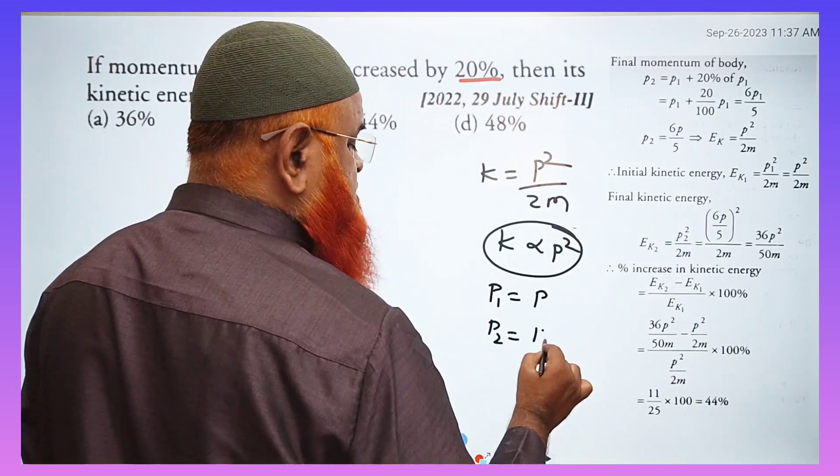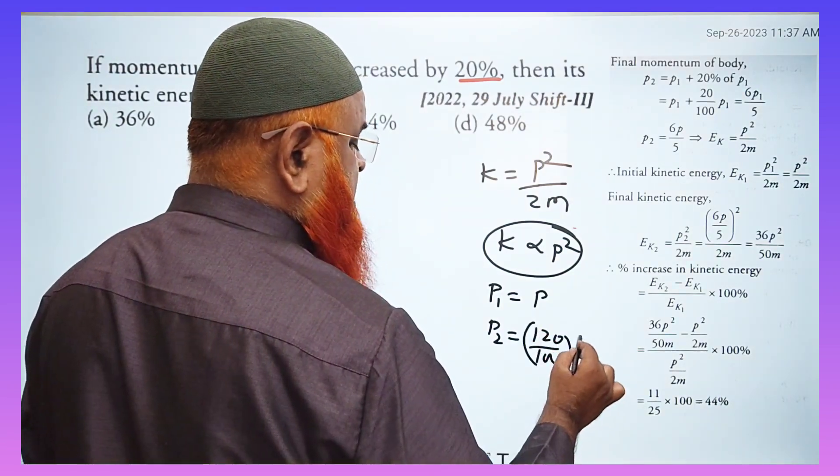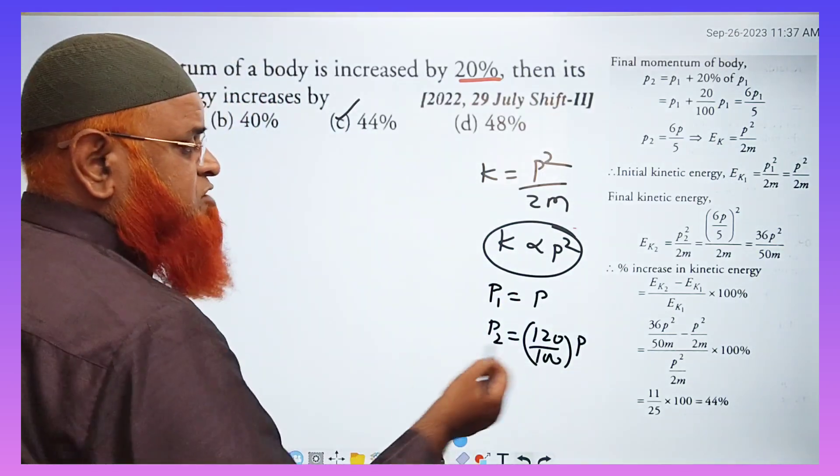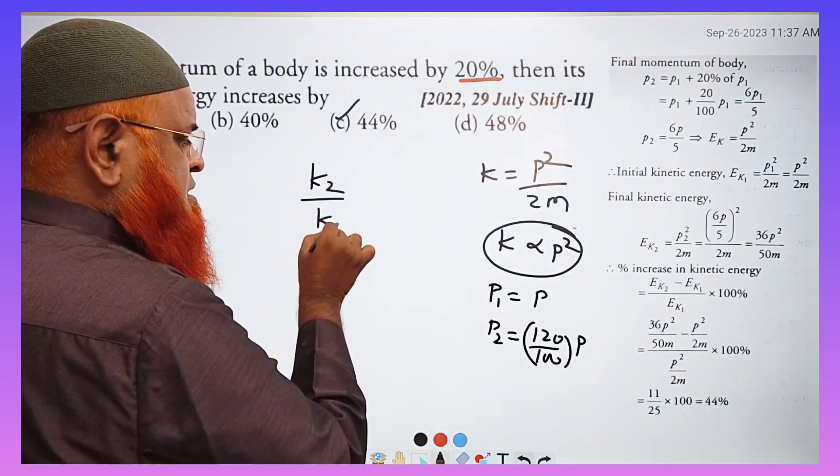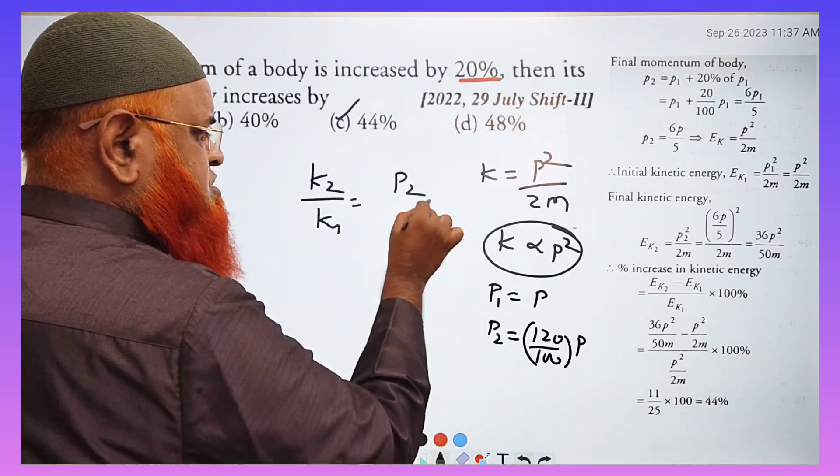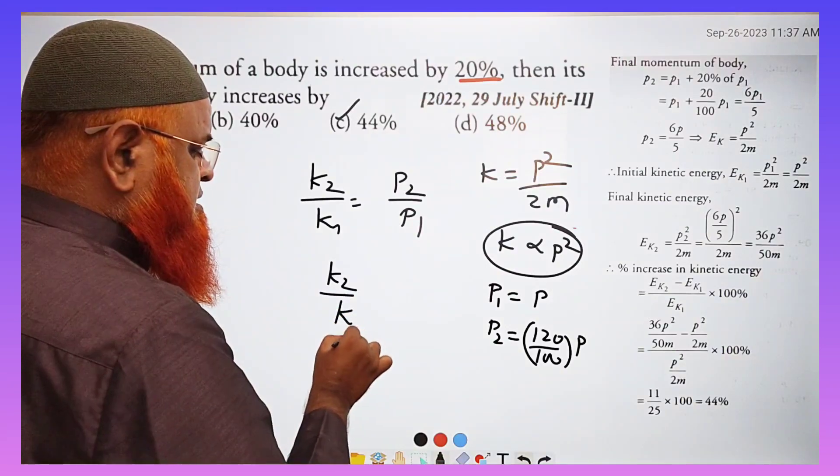What is P2? It is going to be 120% of P. So the final is 120. And you know K2 by K1 is equal to P2 by P1 squared. So K2 by K1 is equal to...